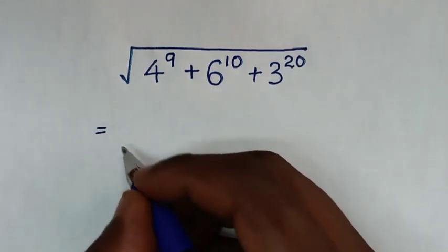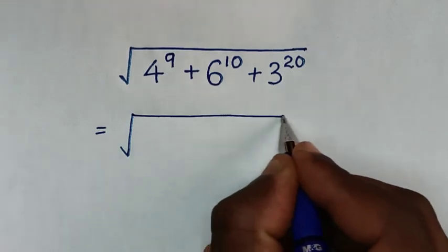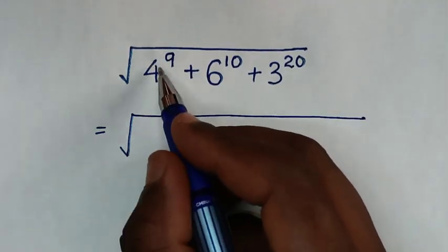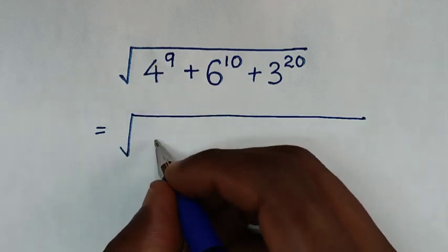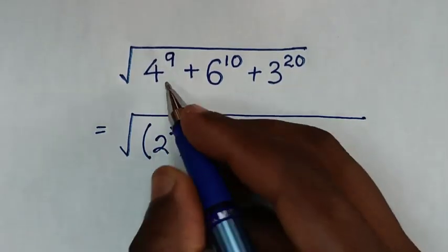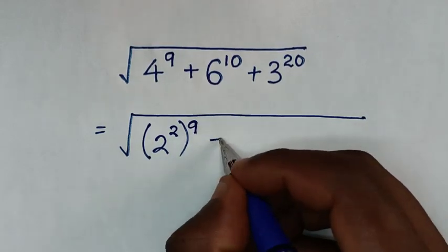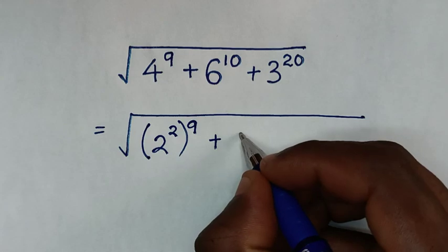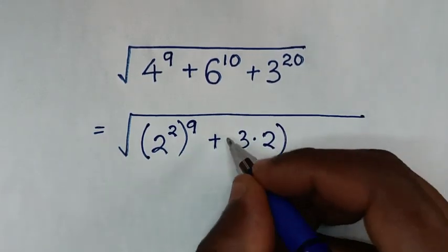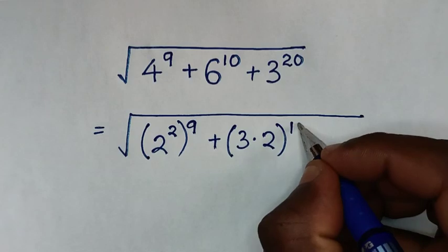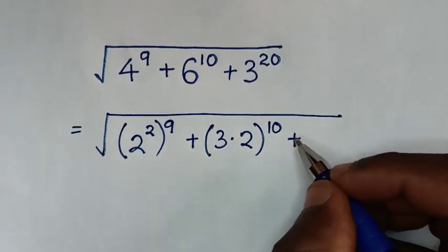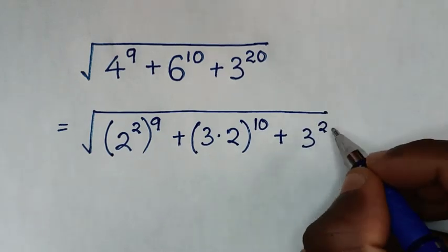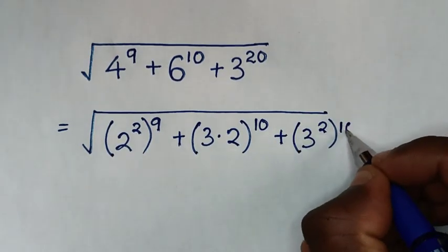So it will be equal to the square root of 4 power 9. Since 4 is the same as 2 squared, we write it as (2²)^9. Then plus 6 power 10 — since 6 is the same as 3 times 2, we write (3·2)^10. Then plus 3 power 20, written as (3²)^10.